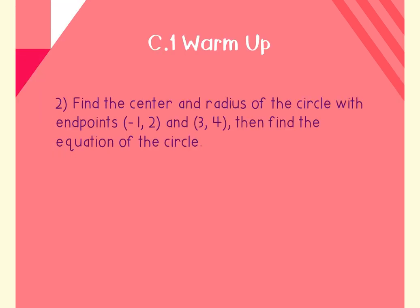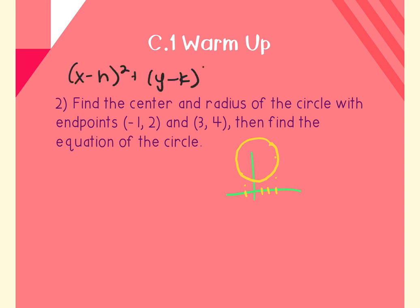Question two takes what we did in the notes on Friday to the next step. On Friday we had the center and radius or center and a point on the circle. This time we have the endpoints of the diameter. The standard form of a circle equation is (x - h)² + (y - k)² = r², and for that I need the center (h, k) and the radius r.